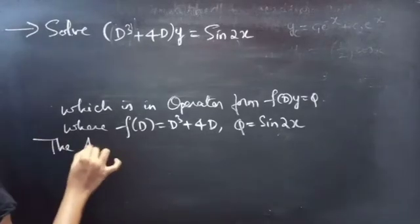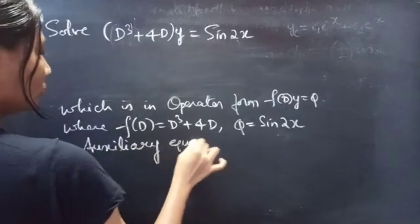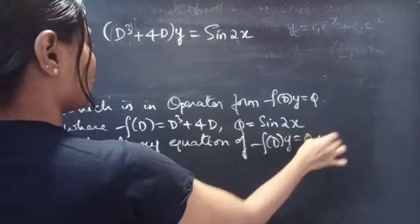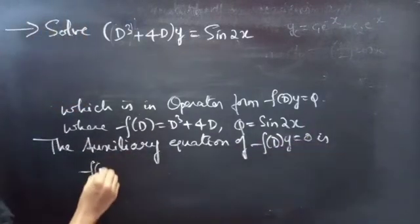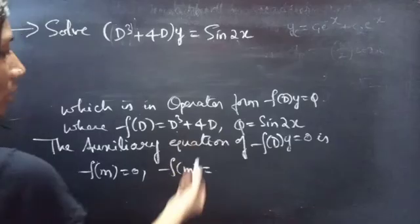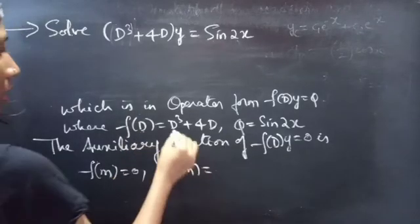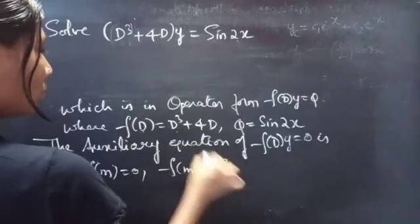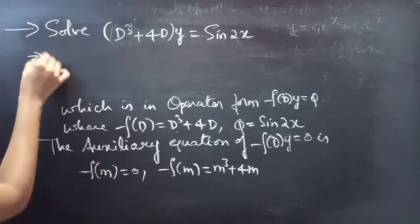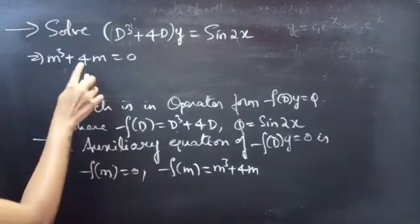The auxiliary equation of F(D)·y = 0 is F(m) = 0. Since F(D) = D³ + 4D, we replace D by m to get F(m) = m³ + 4m. So our auxiliary equation becomes m³ + 4m = 0.